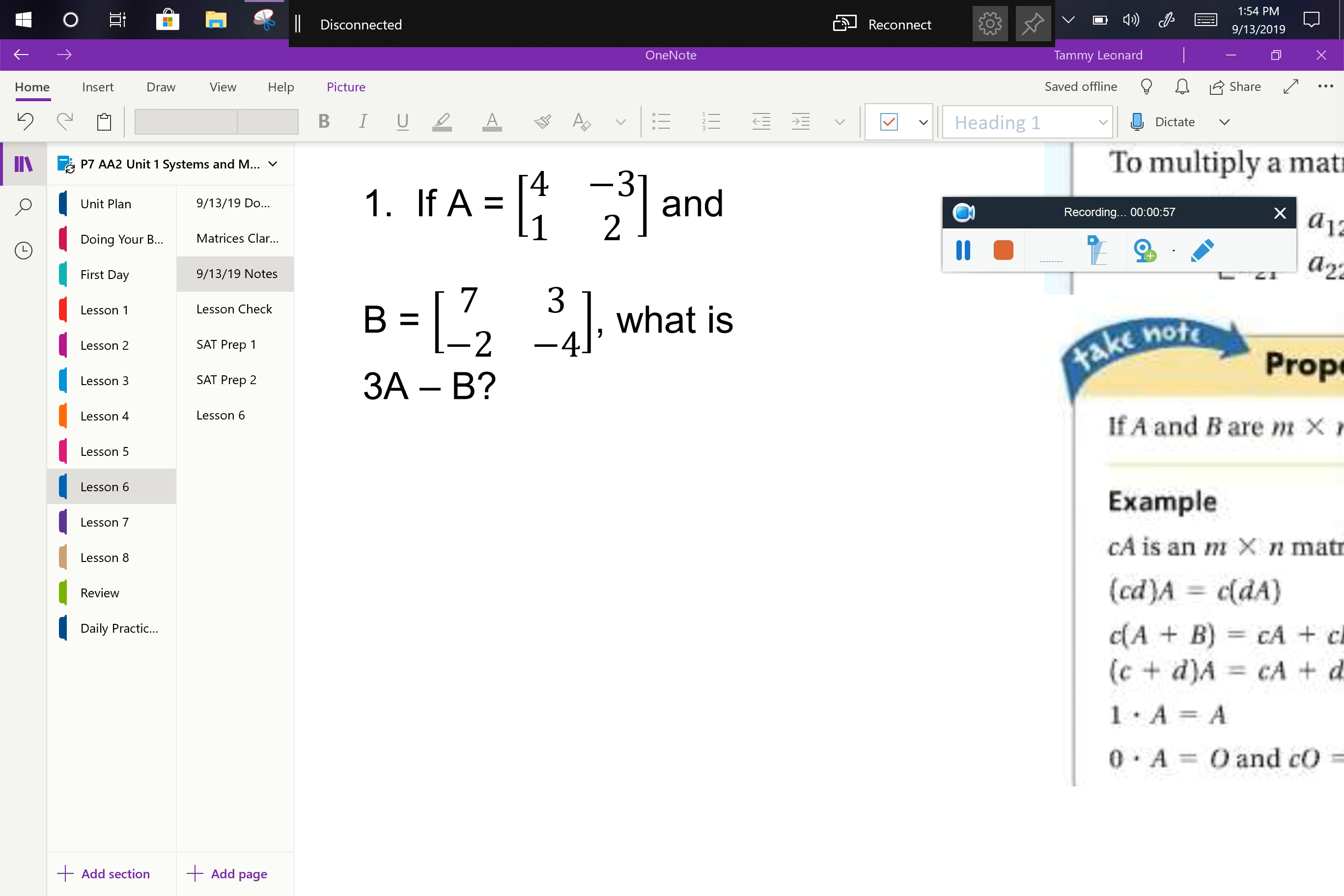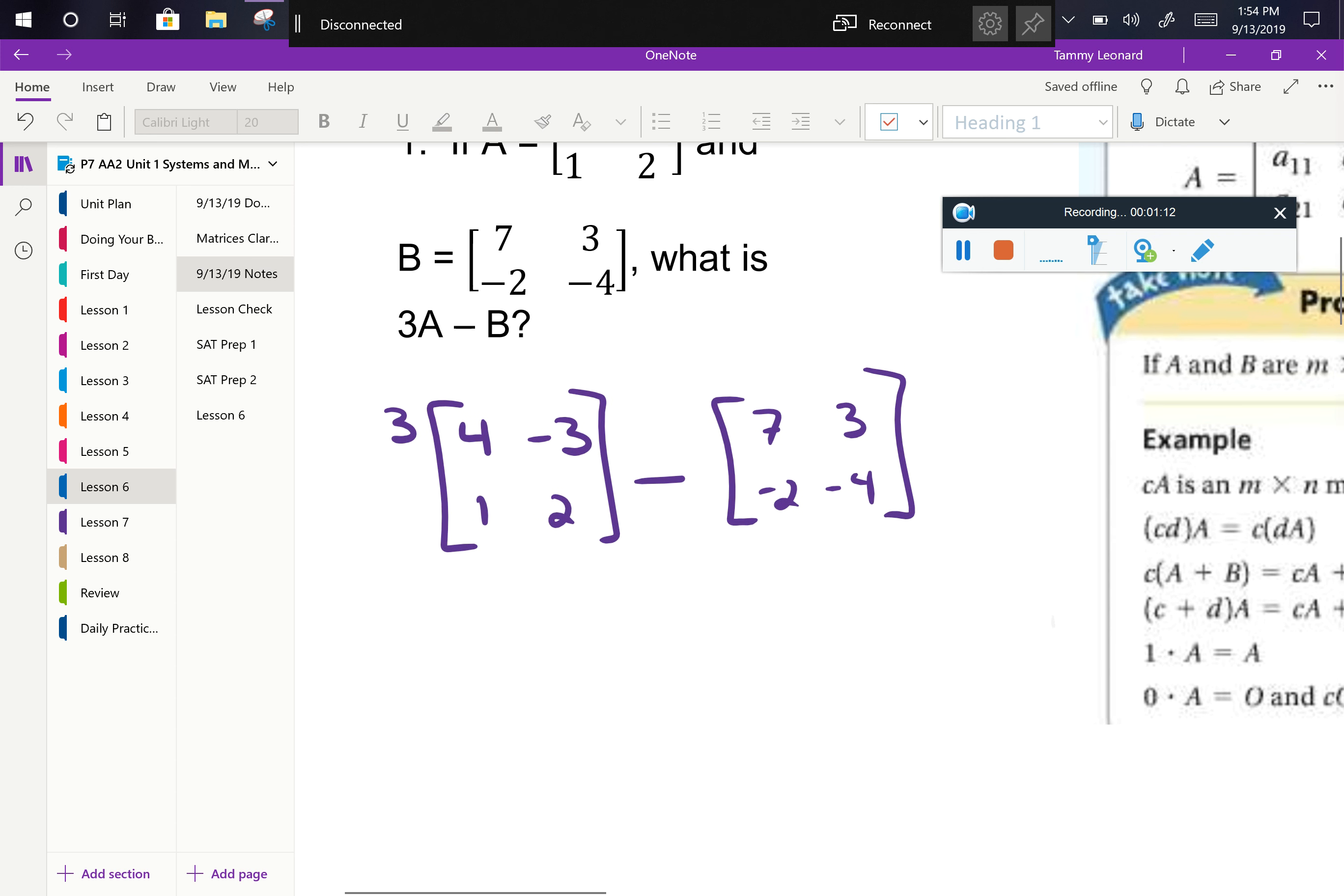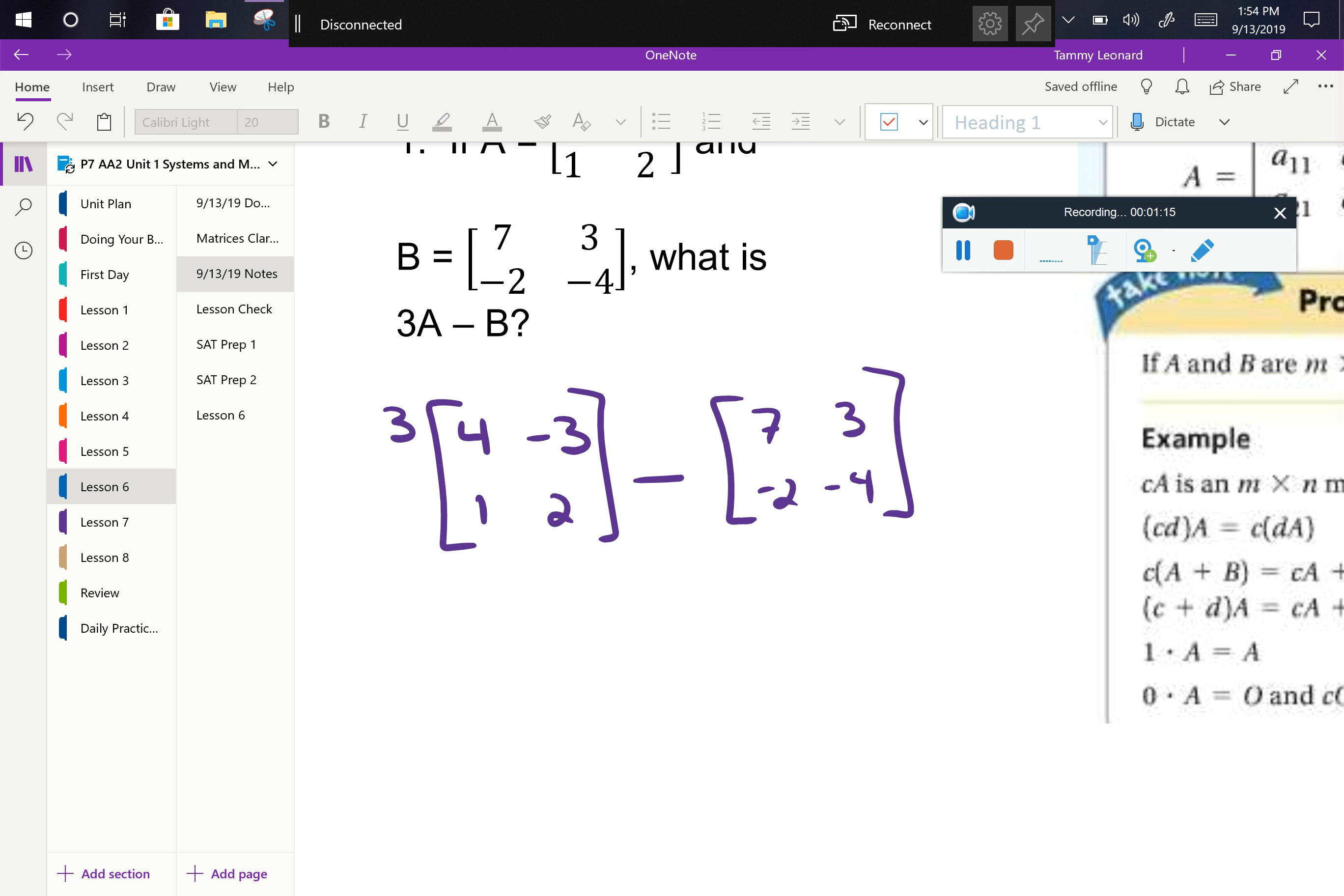Remember when you see capital letters, especially in the context of this unit, and the next unit, that means a matrix. So they're saying 3 times matrix A, which we know to be 4, negative 3, 1, 2, minus matrix B, which we know to be 7, 3, negative 2, negative 4. So when you're doing a problem like this, the first thing you would do is write down what you're actually doing as opposed to the shorthand notation that's present in the problem.